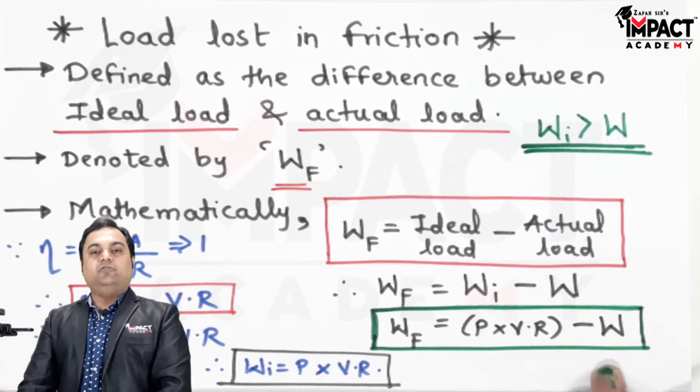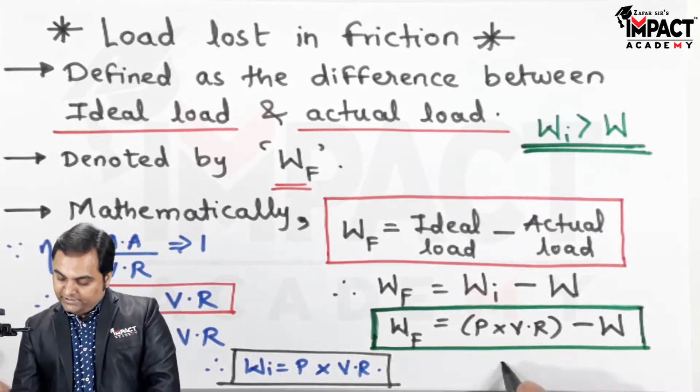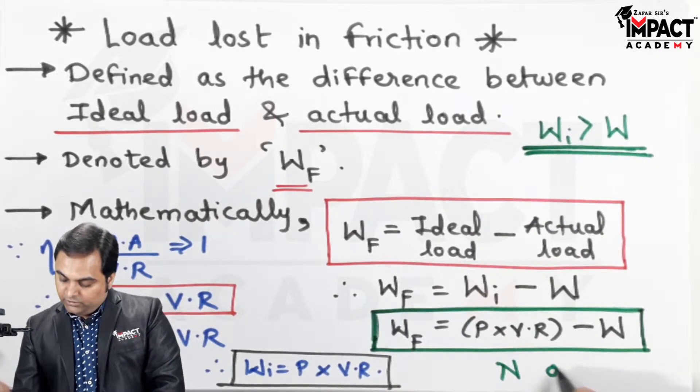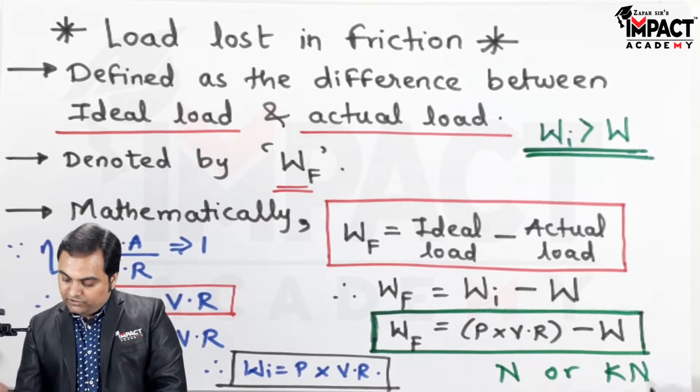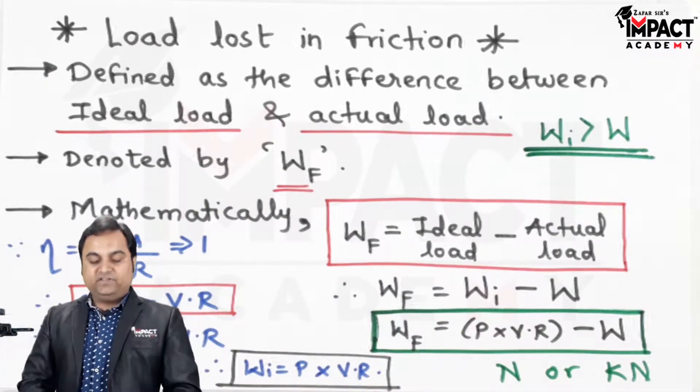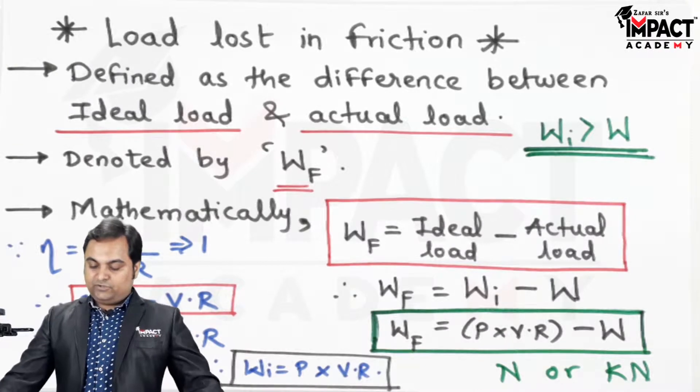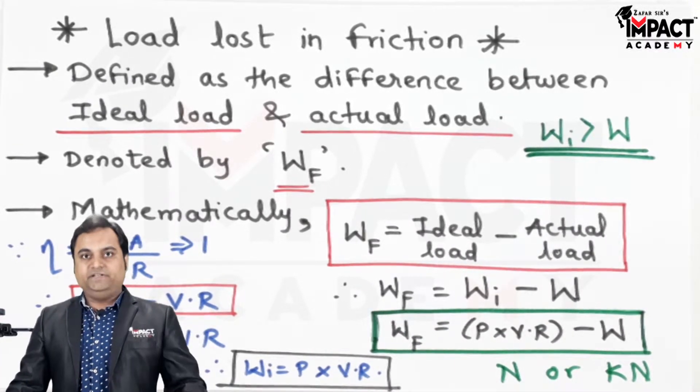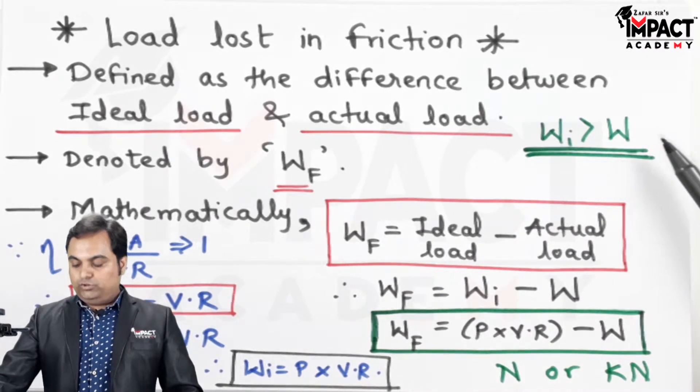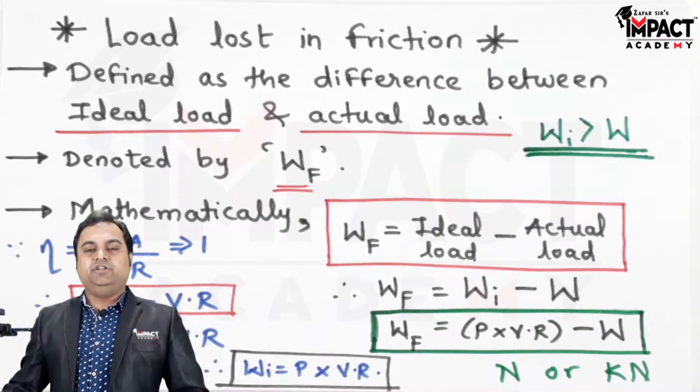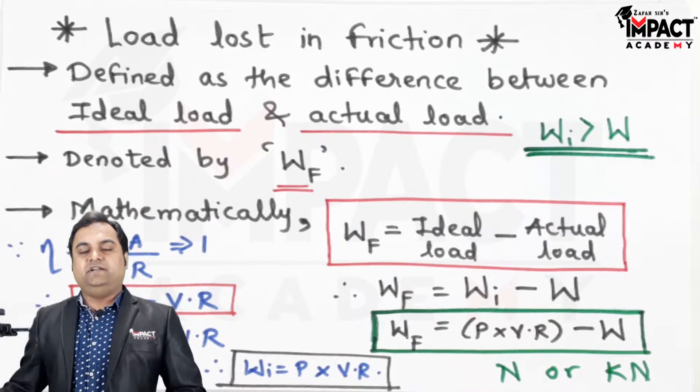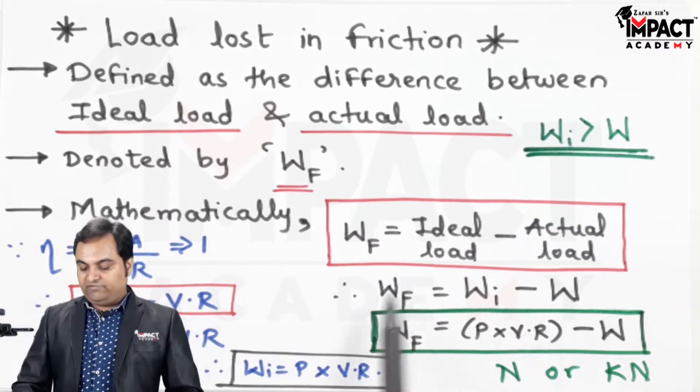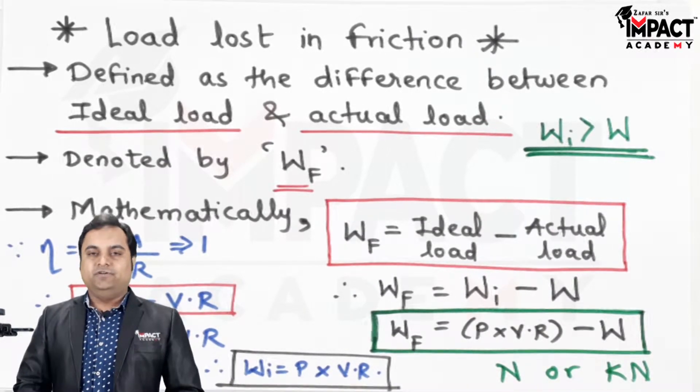So this is the formula for load lost in friction and the unit can be either in terms of Newton or kilonewton. And as we have seen here, in case of an ideal machine the ideal load which we are lifting is greater or comparatively greater to the load which we would be lifting in a machine in which friction is there, that is actual machine, and their difference is called the load lost in friction.